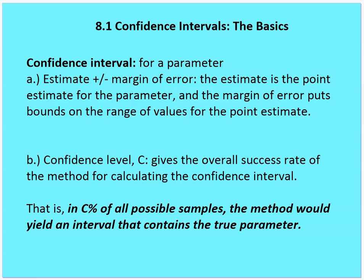A confidence level gives the overall success rate of the method for calculating the confidence interval. That is, C% of all possible samples — whatever method we're using — would yield an interval that contains the true parameter. That's the definition of confidence intervals and confidence levels.